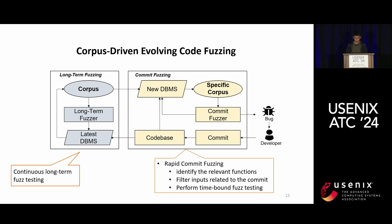WinFuzz overcomes obstacle two by employing a corpus generated through long-term fuzzing to conduct rapid commit fuzzing. In long-term fuzzing, WinFuzz maintains a corpus of the smallest high-scoring test cases capable of providing the broadest code coverage. When a commit is applied to the codebase, WinFuzz carries out commit fuzzing: it first identifies the smallest functions that either contain committed changes or invoke new functions, then extracts specific inputs related to those functions, and performs time-limited fuzzing guided by coverage of the new commit code.